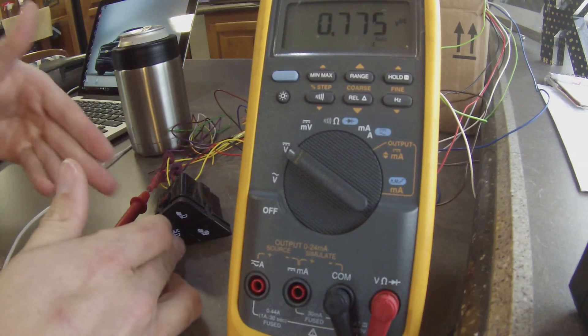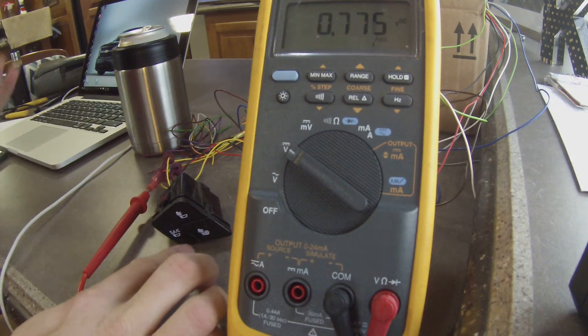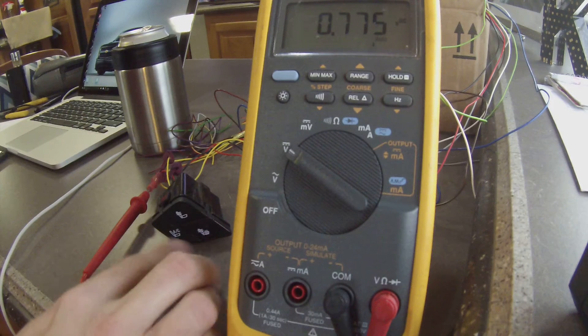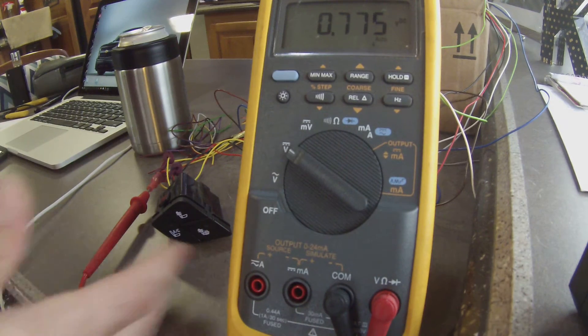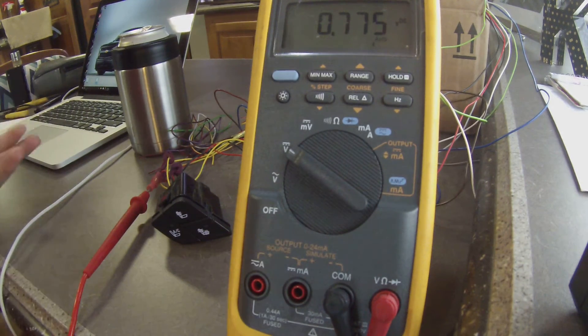So once you kind of get the logic built out for one of the switches, you can copy it over and adjust the different inputs out to it. So normally what would happen is, in a truck where you have this factory or a car where you have this factory.